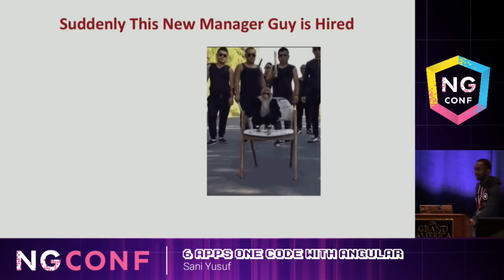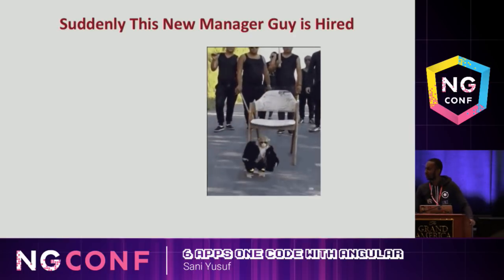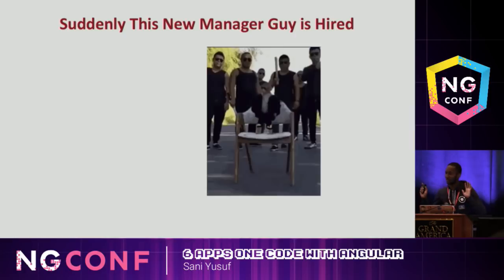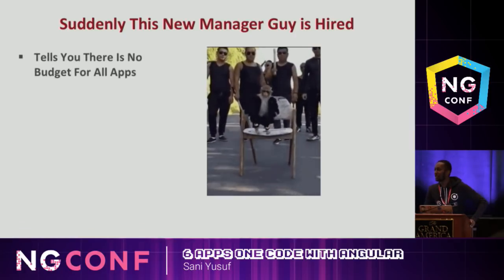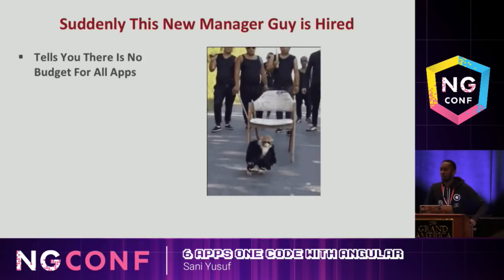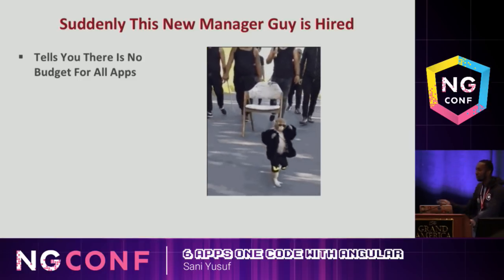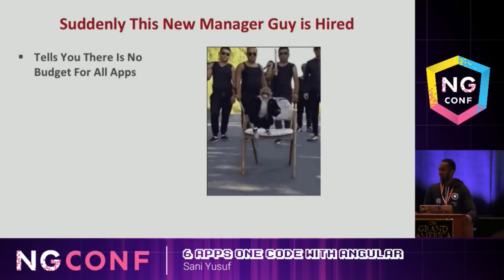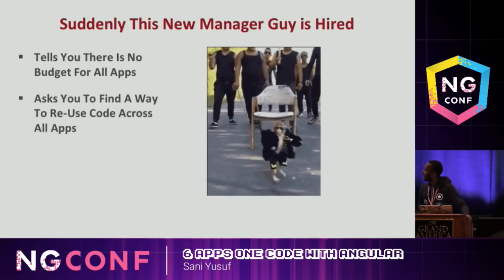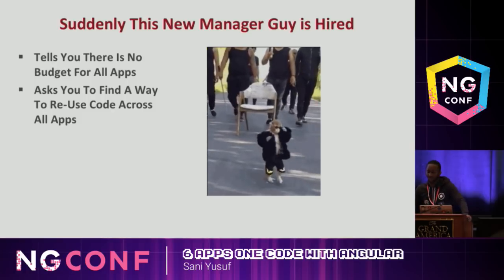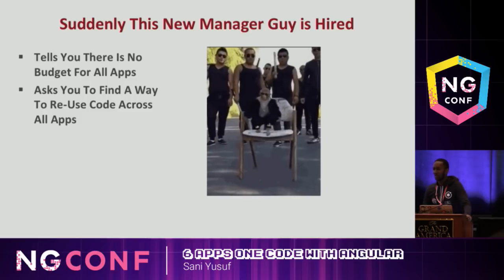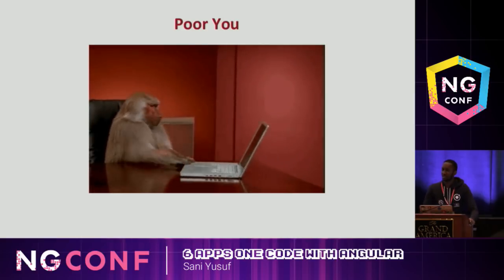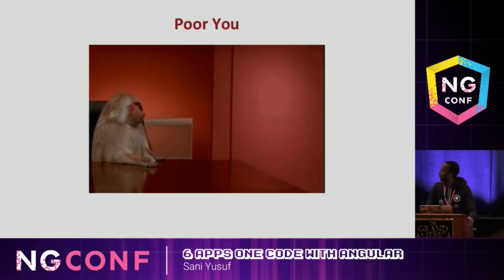And then the new manager gets hired - the guy that comes in and wants to see spreadsheets for the past five years. A bunch of your mates snitch on you, and what's the first thing every new manager says? There's no budget. Developers never have budget, but they have budget for those crazy expensive lunches. He says we ain't got money - you have to find a way to reuse across all these platforms now. So a bunch of your mates are going to get let go and you have to figure this out.